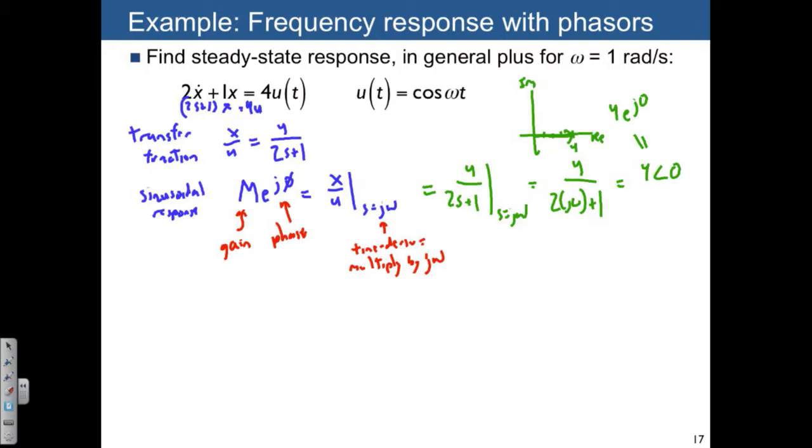The separate case is 2jω + 1. When we plot this in the complex plane, we have 1 and we have 2ω, and we're talking about a complex number with real and imaginary parts 1 and 2ω.